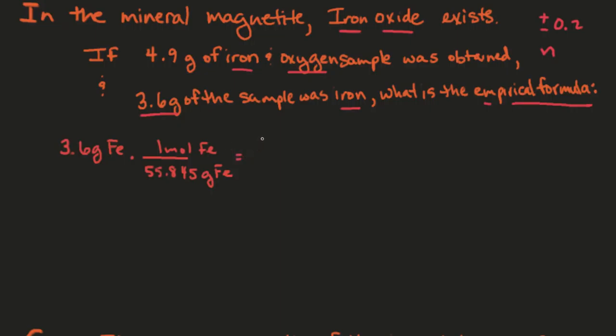So if we do that on your calculator, let's see what we get here. We got 3.6 divided by 55.845, and that gives you 0.06446.